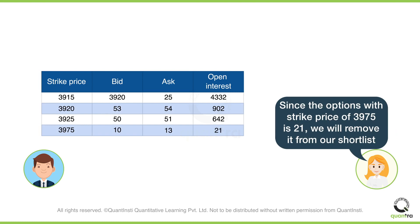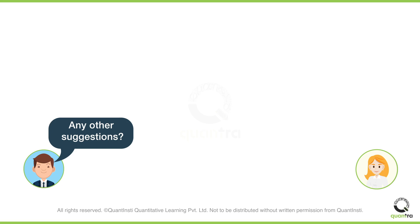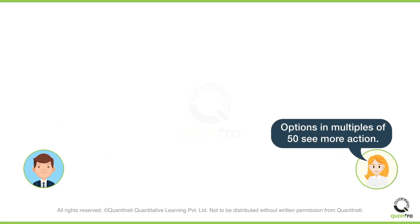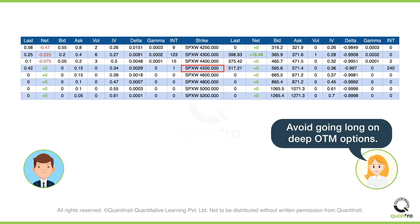You will not select the option with the strike price of 3975 because its open interest is only 21. John thanks Sophie, and she shares additional tips from her experience: options in multiples of 50 — such as 3950, 4000, 4050 — are often where institutional traders and investors are active, so give priority to those over odd strike price options. Secondly, you should avoid going long on deep out-of-the-money options, as they are most likely to expire worthless.